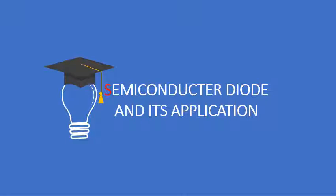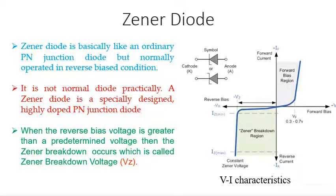In this video, we are going to explain what is a Zener Diode and what are the different breakdowns in the Zener Diode. A Zener Diode is like an ordinary diode but always operated in a reverse biased mode — practically connected in a circuit in reverse biased conditions. It is a specially designed, highly doped PN junction diode. When the reverse biased voltage is greater than the predetermined voltage — for example, if a Zener is of 5V — the Zener will get breakdown, and this voltage we call it the Zener breakdown voltage.